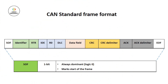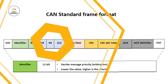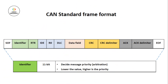Starting with SOF — Start of Frame. It is a single dominant bit which marks the start of a message. It is used to synchronize nodes on the CAN bus, and hard synchronization is done at SOF. Moving ahead, the Identifier is 11 bits. It is used to decide the priority of a message — lower the value, higher is the priority.